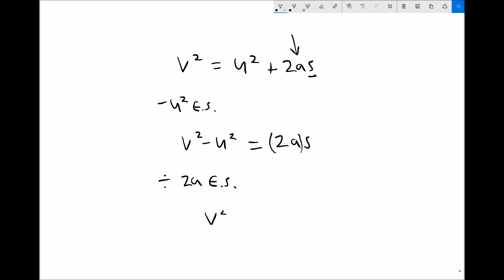We get v squared minus u squared, and I'm going to put that in brackets again like last time, divided by 2a equals s, or s equals v squared minus u squared, all divided by 2a.